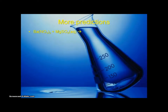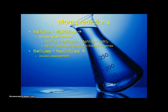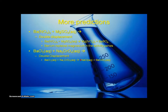Here are some more — again, if you are unsure, check the electromotive series. Barium nitrate and magnesium sulfate is a double displacement — here's the balanced equation. Barium chloride and sodium chromate is also a double displacement, and sodium displaces barium in the activity series.